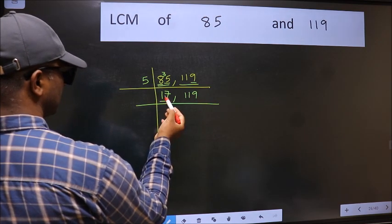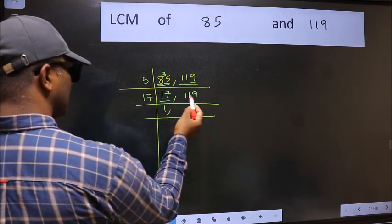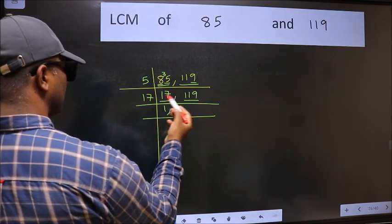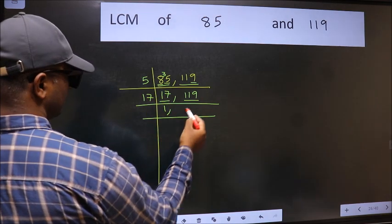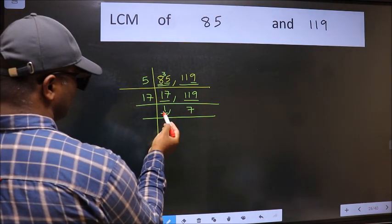Now here we have 17. 17 is a prime number, so 17-1-17. The other number 119. When do we get 119 in 17 table? 17 times 7 is 119.